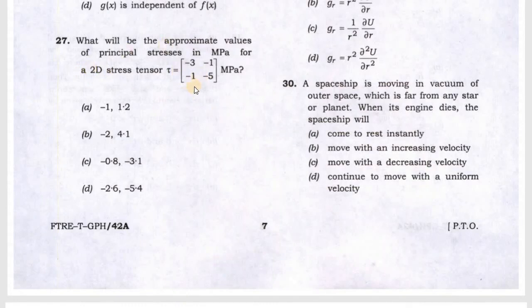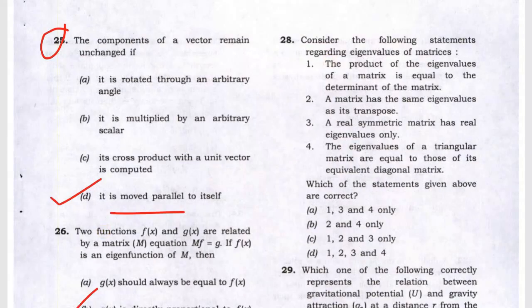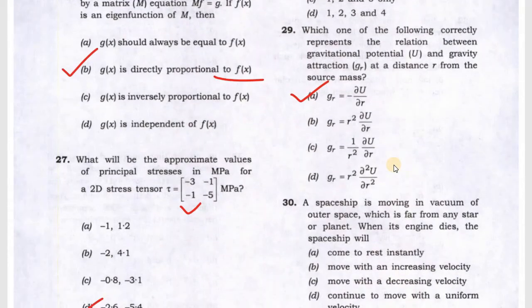Next they are asking about the trace of a matrix. If you find out the eigenvalue of this, then you got the answer, and it will be D. Next they are asking about matrix properties, quite a difficult one. It seems easy but it is not, it is a trap question. Next question is about gravitational potential and gravitational attraction. This will be option A will be the correct one.